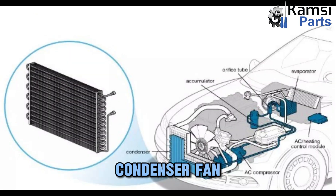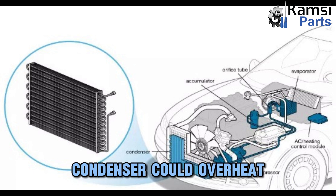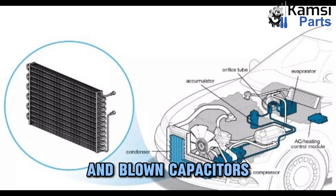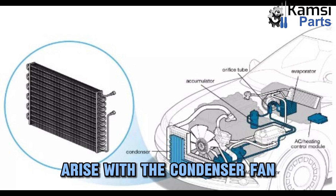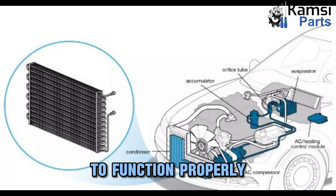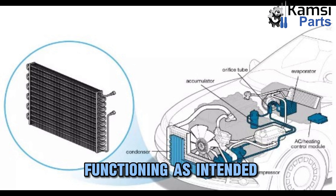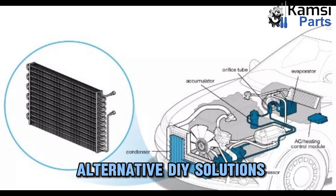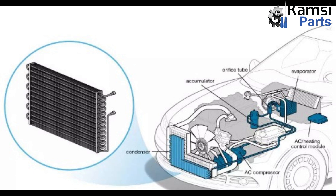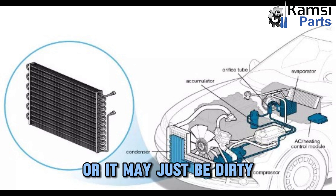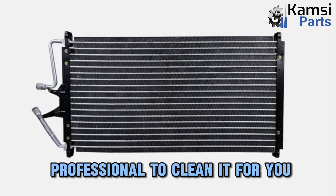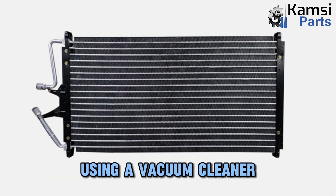Problem with the AC condenser fan. Your air conditioner's condenser could overheat if the fan isn't functioning. Bent blades, motor failures, and blown capacitors are a few issues that can arise with the condenser fan. Since air conditioners require adequate airflow to function properly, a jammed fan will prevent the air conditioner from functioning as intended. You can attempt a few DIY solutions before calling a professional. A tree or bush may be blocking the fan, or it may just be dirty and in need of cleaning. You can either hire a professional to clean it or attempt cleaning it yourself using a vacuum cleaner or coil brush.